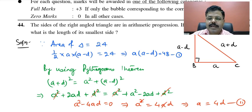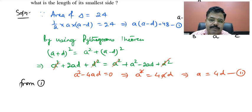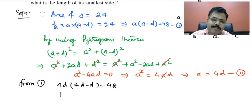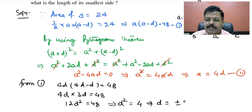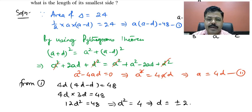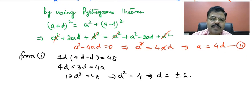Substituting a = 4d into equation one: 4d times (4d minus d) = 48, so 4d times 3d = 48, giving 12d² = 48, so d² = 4, and d = ±2. We reject the negative sign since side lengths must be positive, so d = 2.